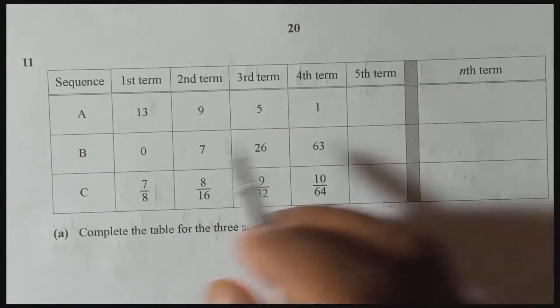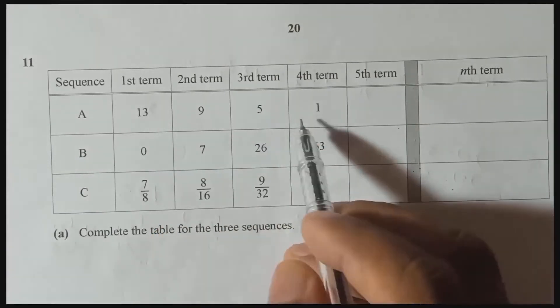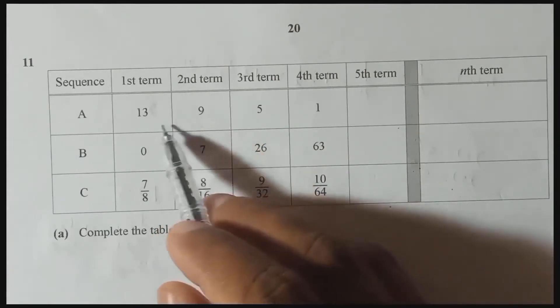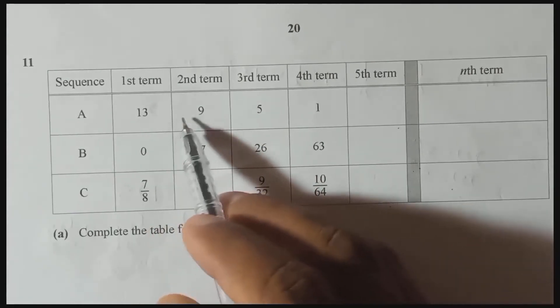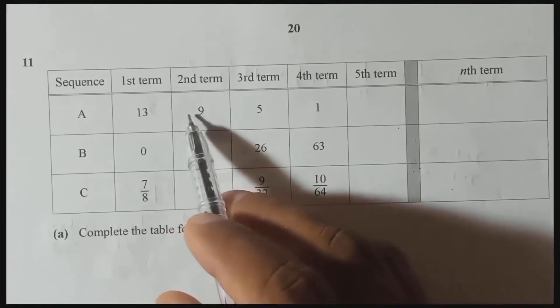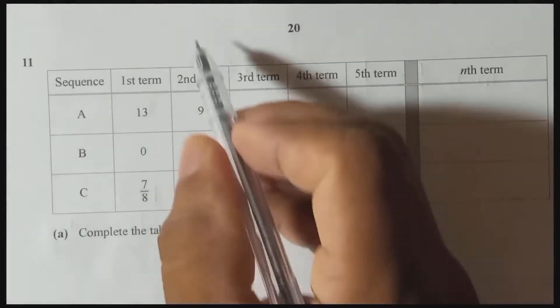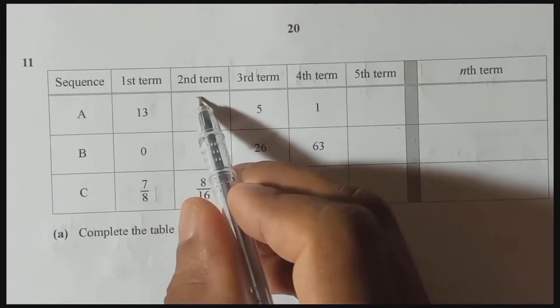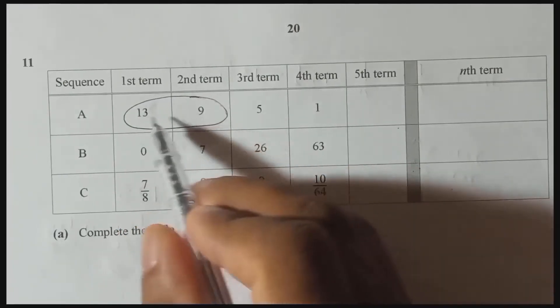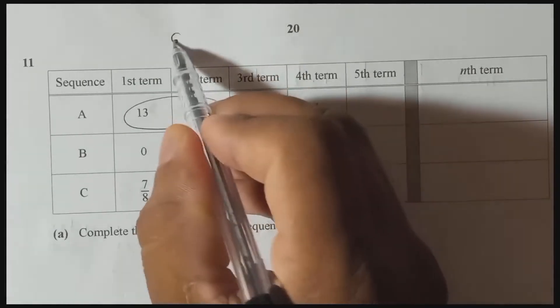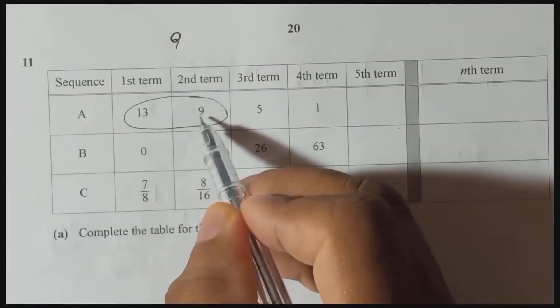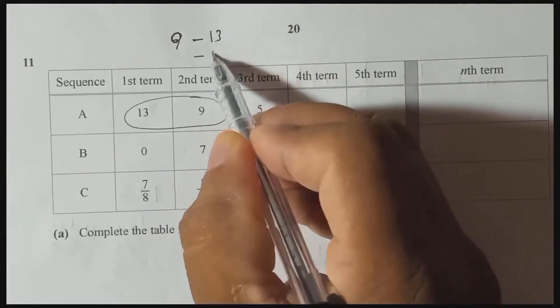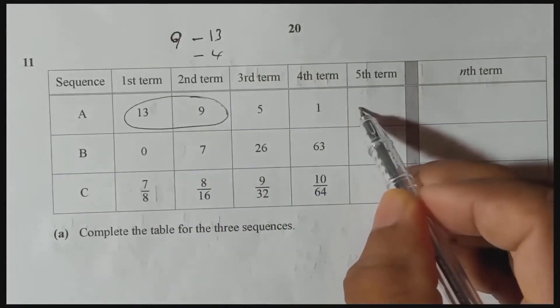To find the fifth term, it's very simple. When you look here, you can see this is an arithmetic sequence. The common difference: from 13 to 9 is 4. To find the common difference, from the second term we subtract the first term — consecutive two terms close to each other. Second term is 9, so 9 minus 13 gives minus 4. That's why the common difference is minus 4.